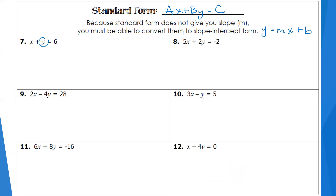In number seven, we have x plus y equals six. I want to get y by itself. Right now I have an x being added to it, so I subtract x from both sides — they cancel on the left, leaving just y. I want it in mx plus b form, so I write it with the x term first: y equals negative x plus six. The slope is negative one and the y-intercept is six.